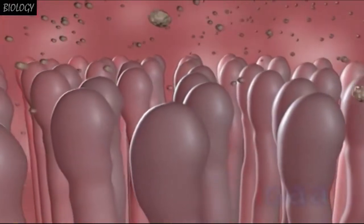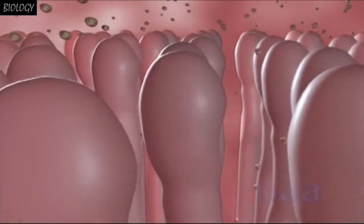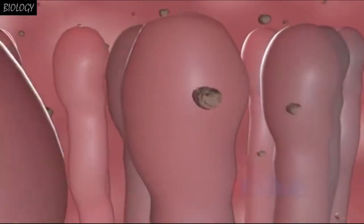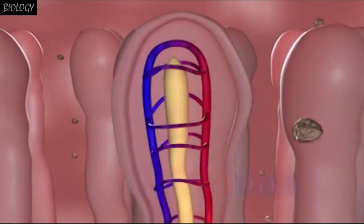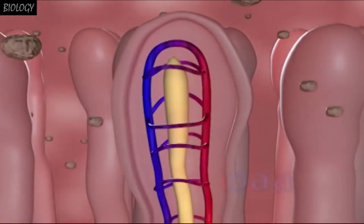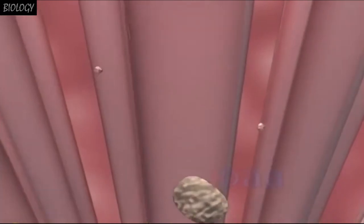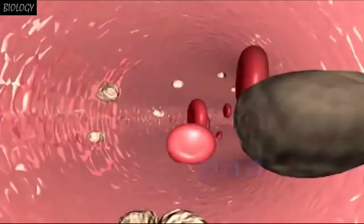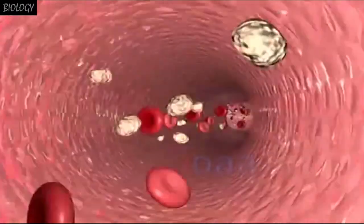The food is now fully digested and ready to be absorbed into the blood. The inner wall of the small intestine has finger-like projections called villi, which have a network of thin blood vessels close to the surface. The villi increase the surface area for absorption and absorb the digested food materials. The absorbed substances are transported through the bloodstream to different organs and used to build complex substances like proteins. This process is called assimilation.